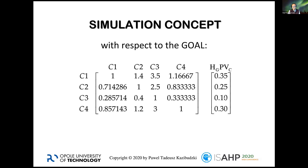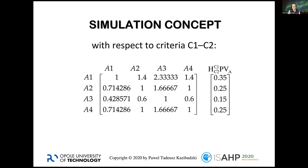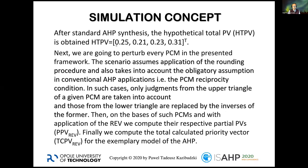Here we have an example where, on the basis of a hypothetical priority vector, I established a pairwise comparison matrix computed directly from that hypothetical priority vector — which, in the assumption, reflects some physical attributes of four objects. Here we have such a hypothetical priority vector with respect to the goal, and also two hypothetical priority vectors with respect to criteria C1, C2, C3, and C4. On that basis I calculated the hypothetical total priority vector.